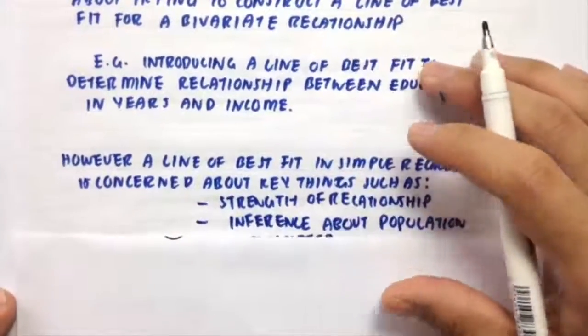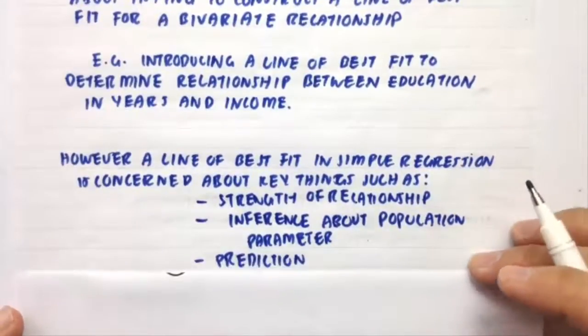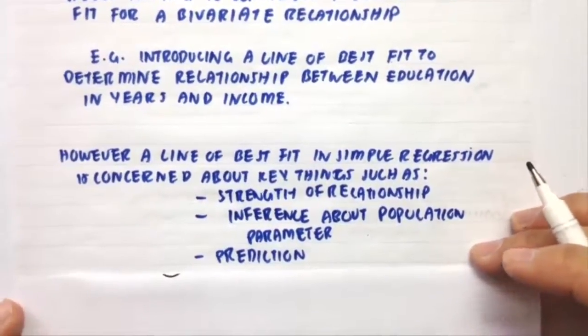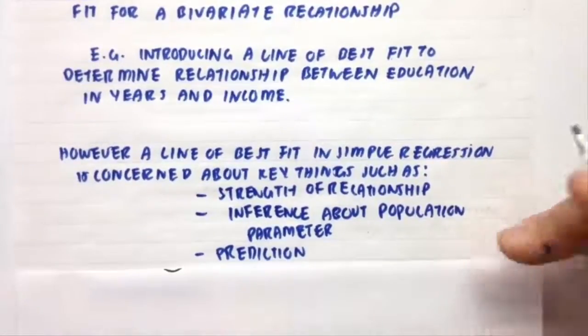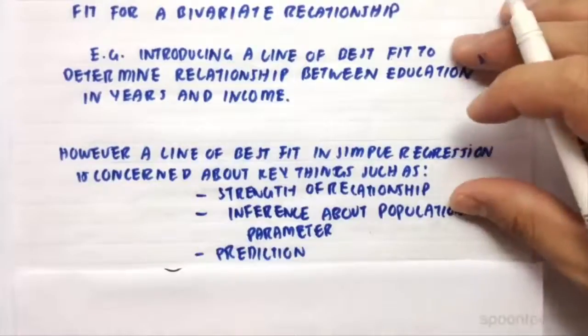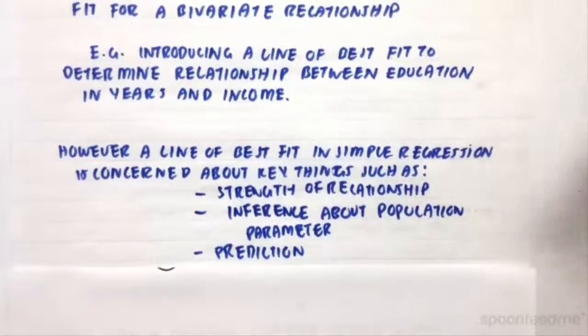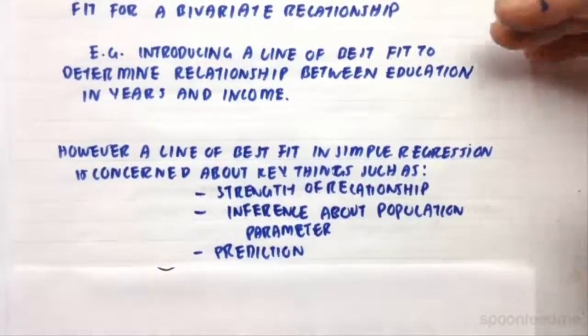However, a line of best fit in simple regression is concerned about three key things. So firstly, we have the strength of the relationship. So how strong is the relationship between education in years and income? So does it consistently give you a certain amount of income for every single time you study in that extra year, or are the results clustered around that line of best fit to show that strength of relationship?